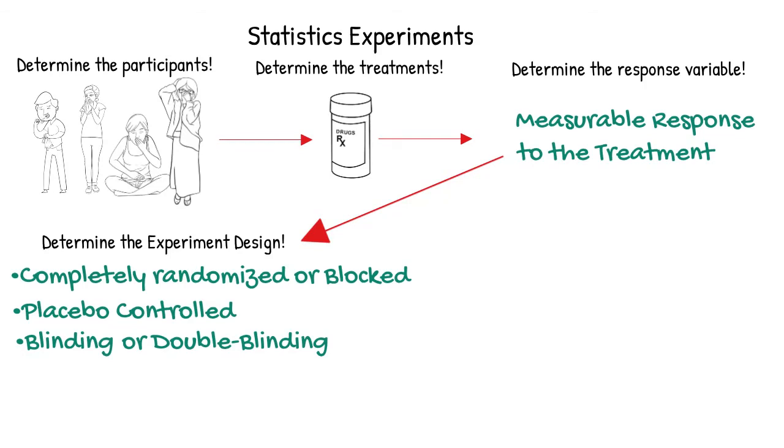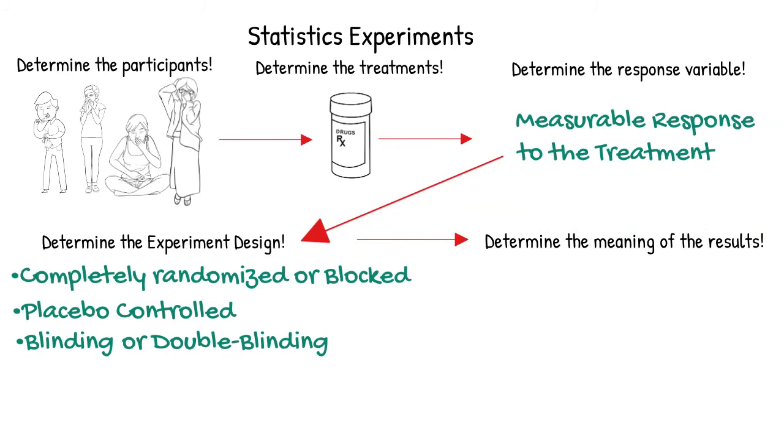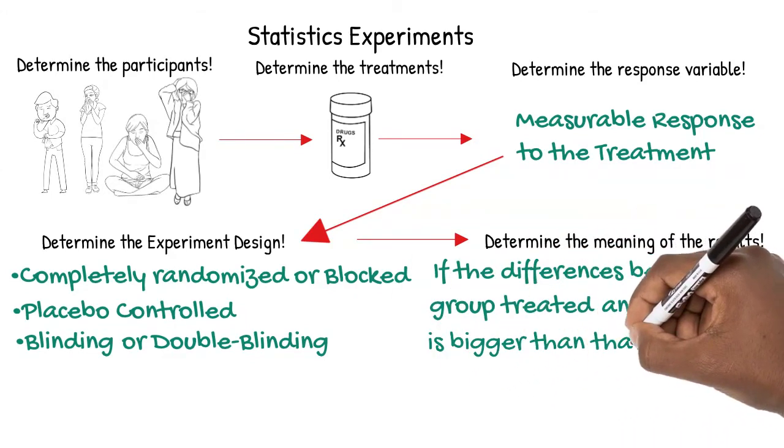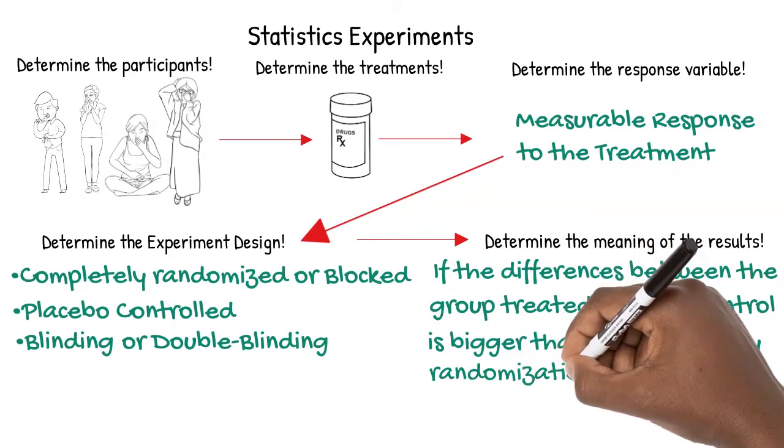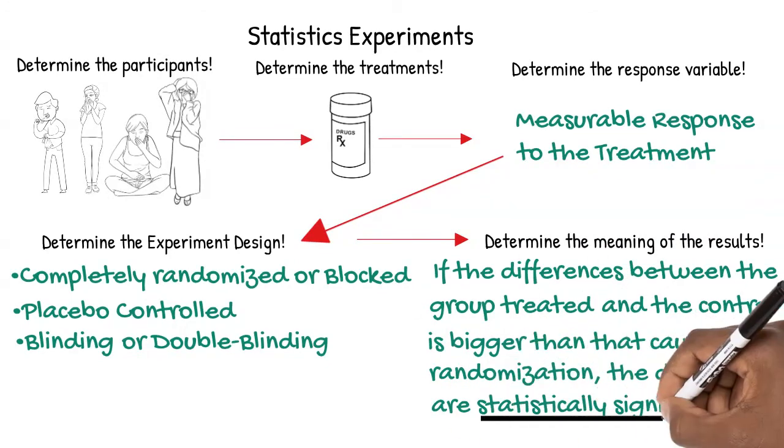Once the experiment has been designed and executed, we can determine the meaning of the results. If the differences between the groups treated by the medication and the placebo control group is bigger than that caused by randomization, the differences are said to be statistically significant.